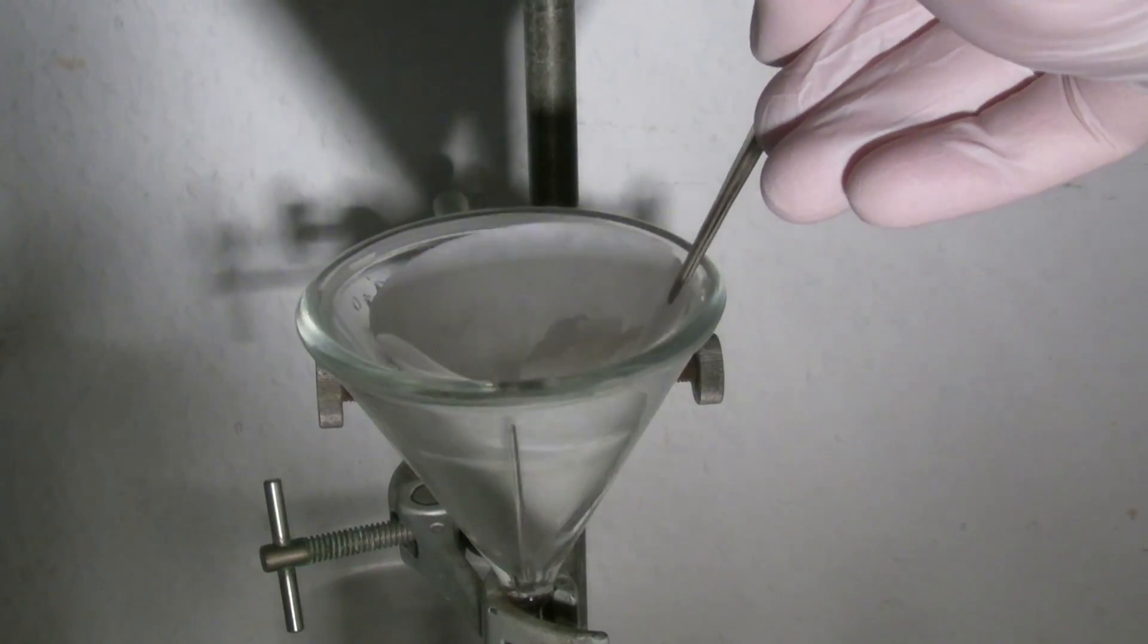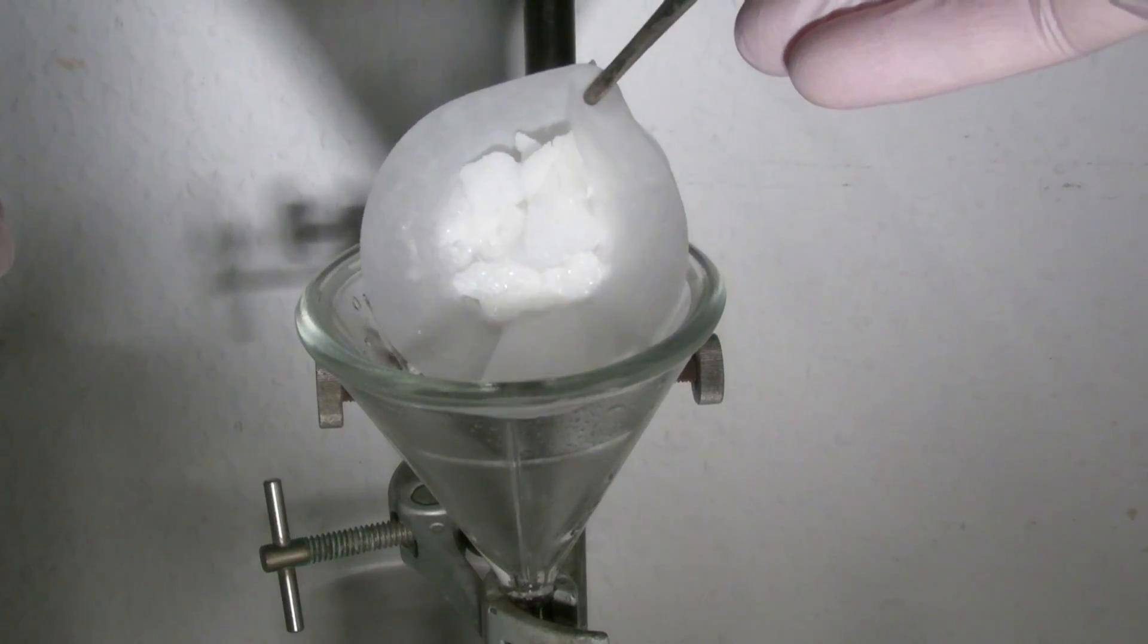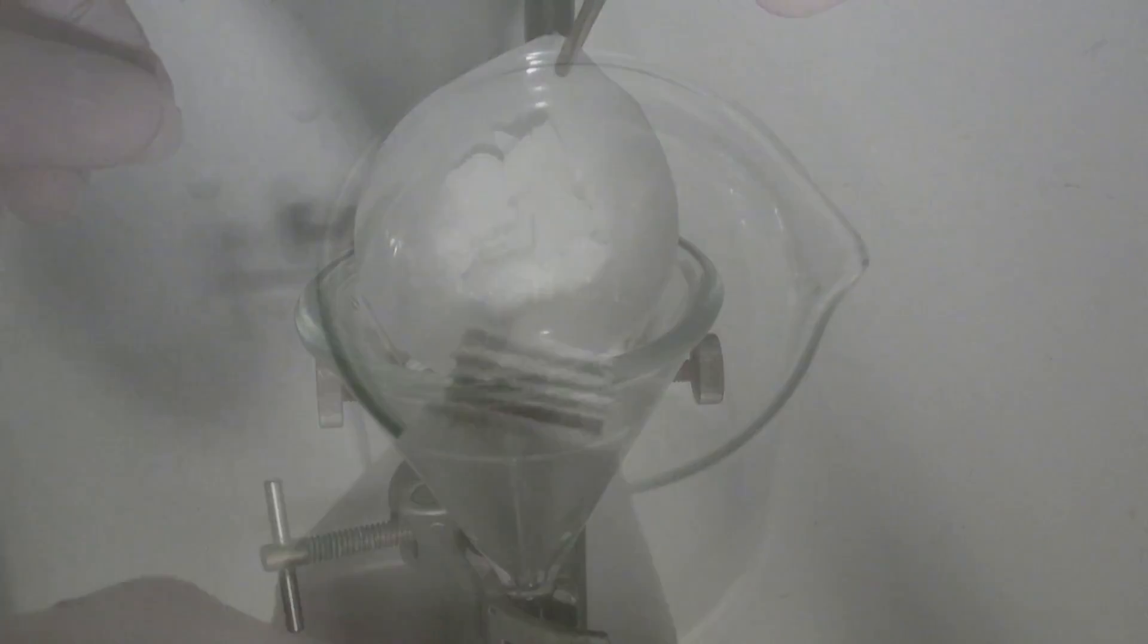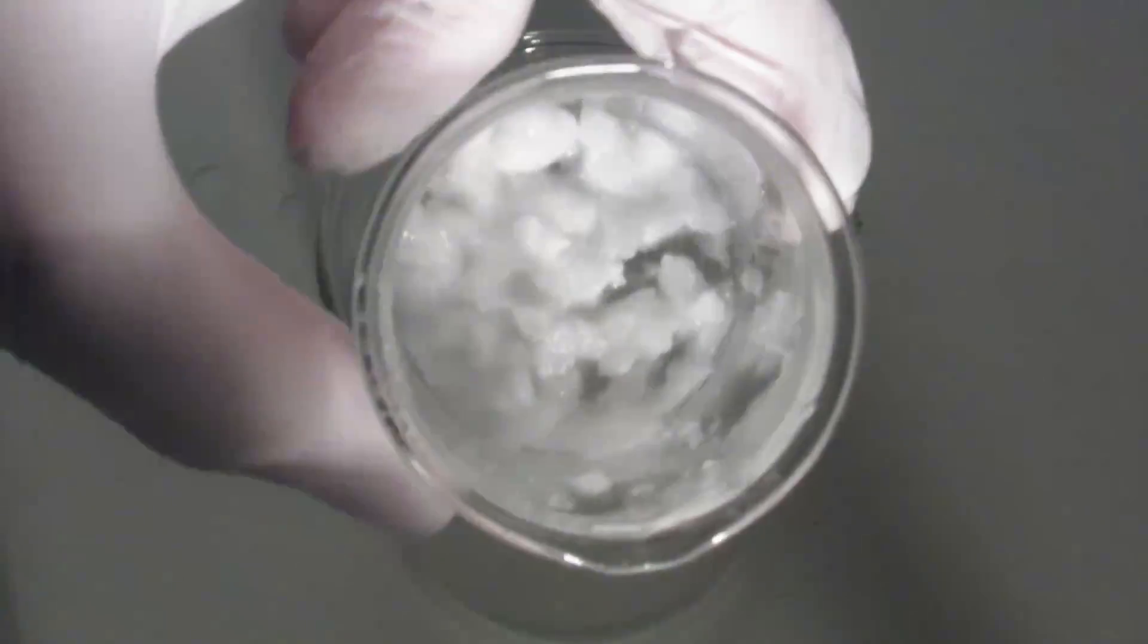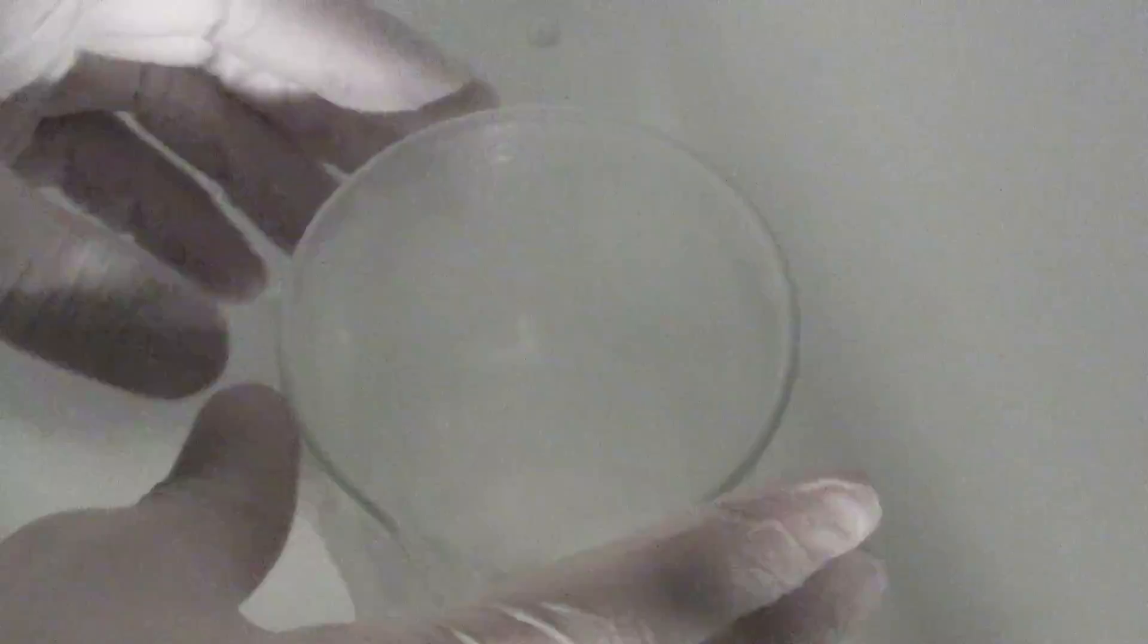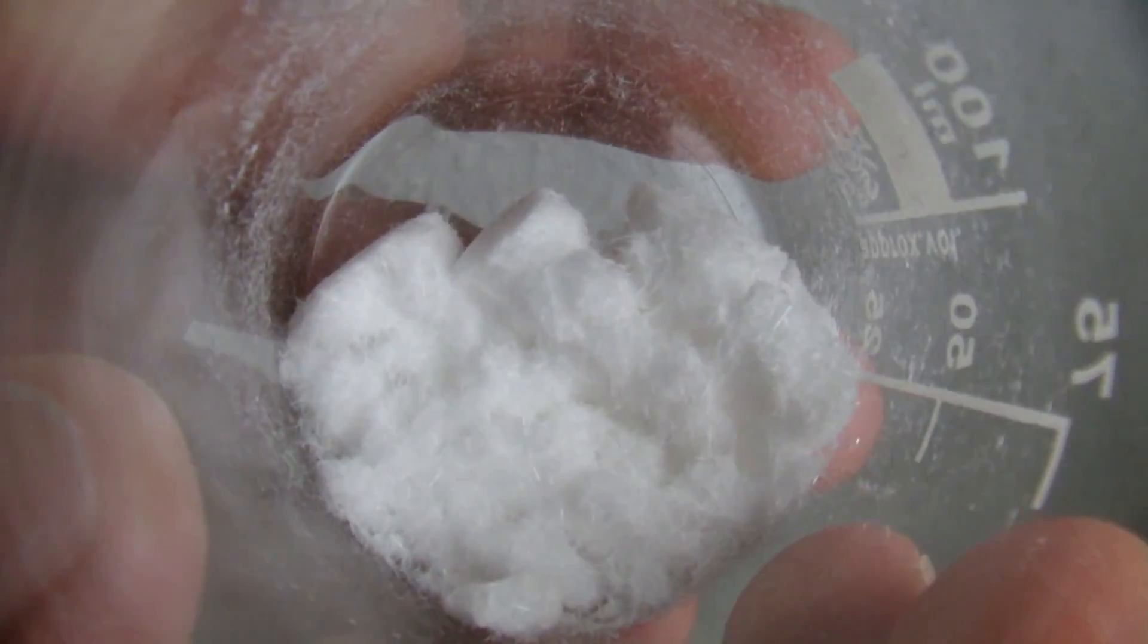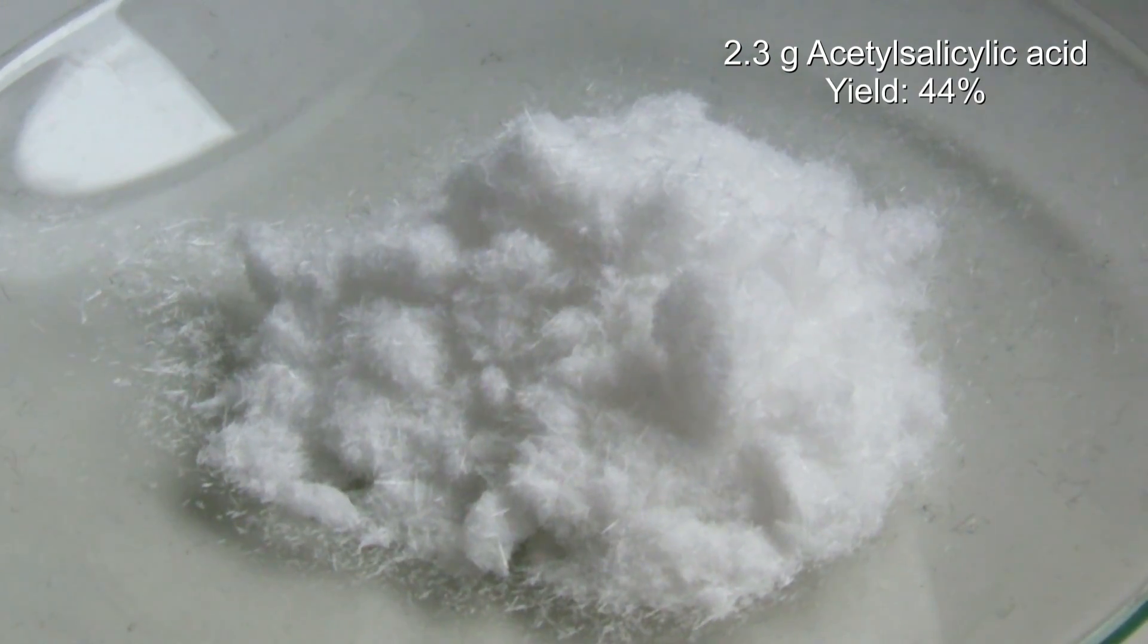Large shiny crystals are often a sign of a pure product. The higher the impurities the smaller and less beautiful are the crystals. The crystals can be dried on air or in a desiccator with a drying agent of your choice. In this case sulfuric acid is used. The product had to be recrystallized two times. After drying it the amount of acetyl salicylic acid was 2.3 grams which is a yield of 44%.